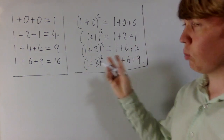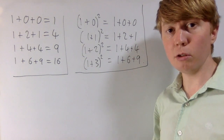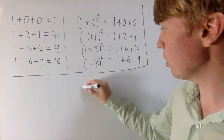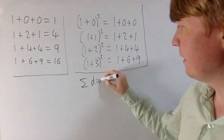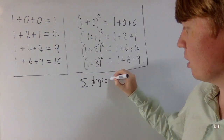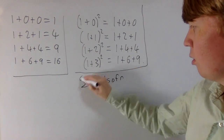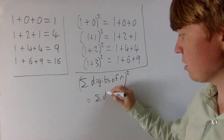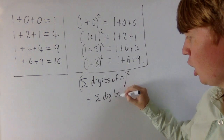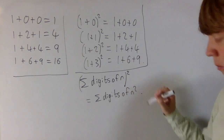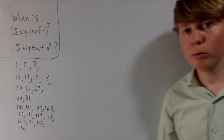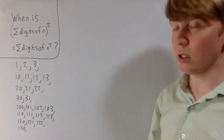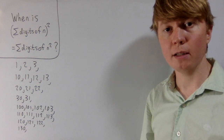So we're going to try and understand why this is happening for these numbers. We'll also try and answer the question of which other numbers this rule works for. So we're going to be interested in answering: when is the sum of digits of n, when we square this, equal to the sum of digits of n squared? A really useful first step could just be to list some of the numbers which do satisfy this property and see if we can find some patterns.